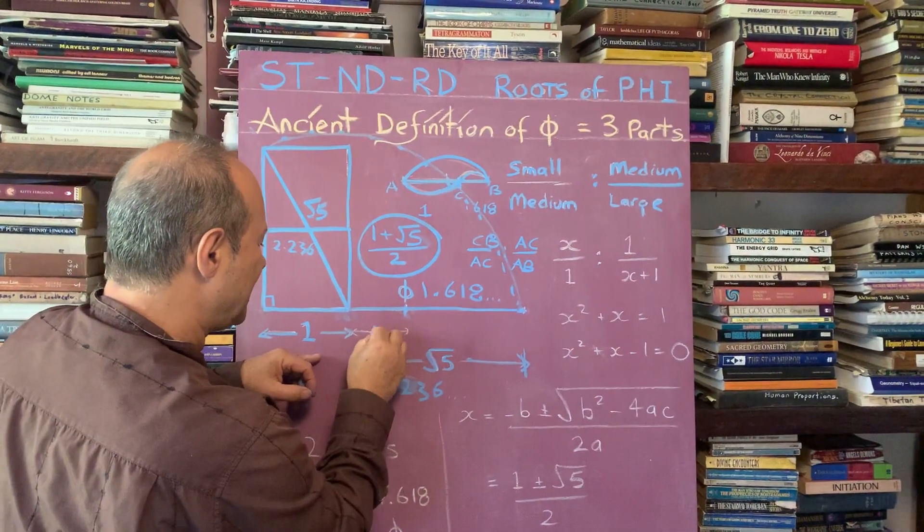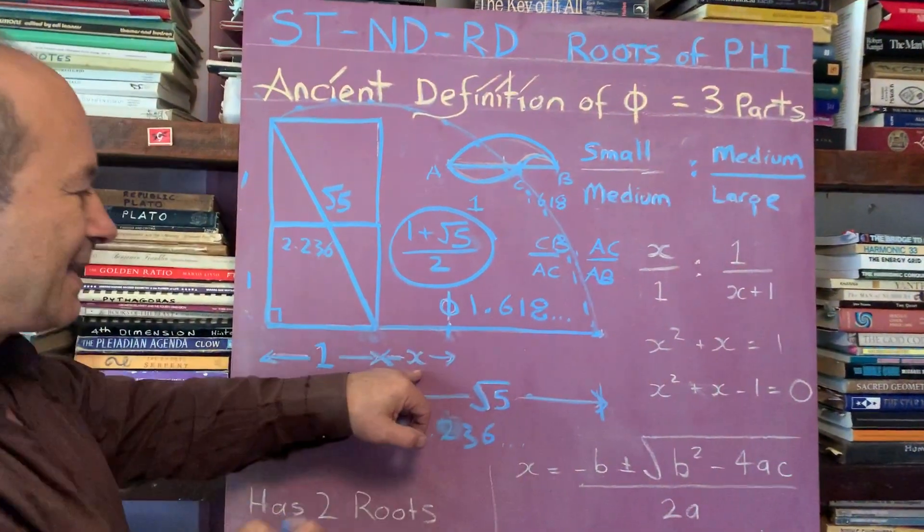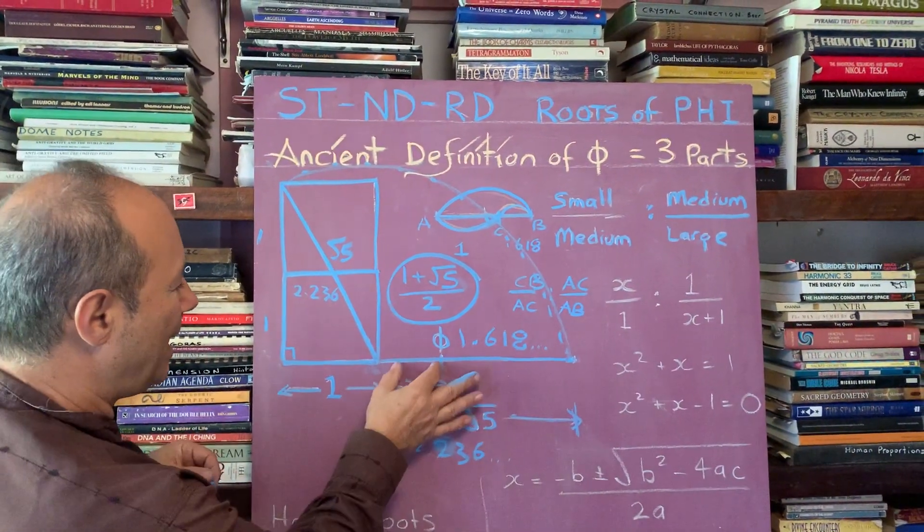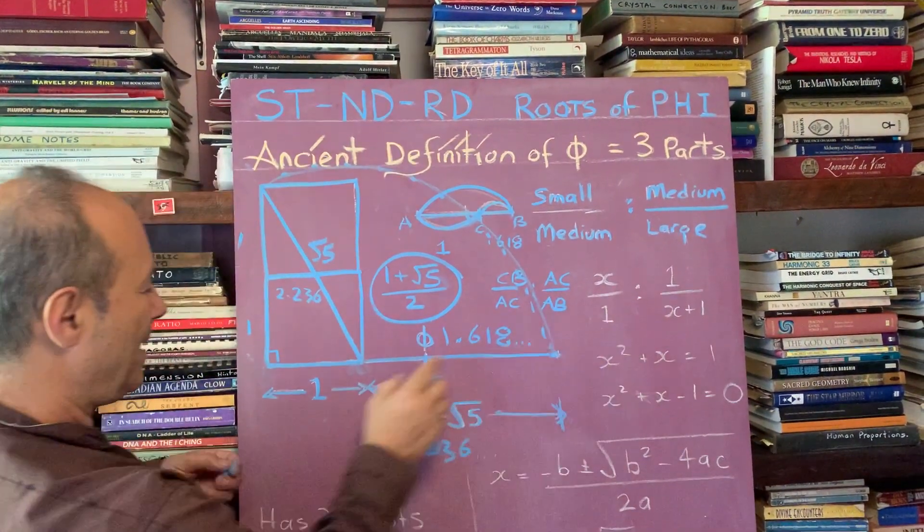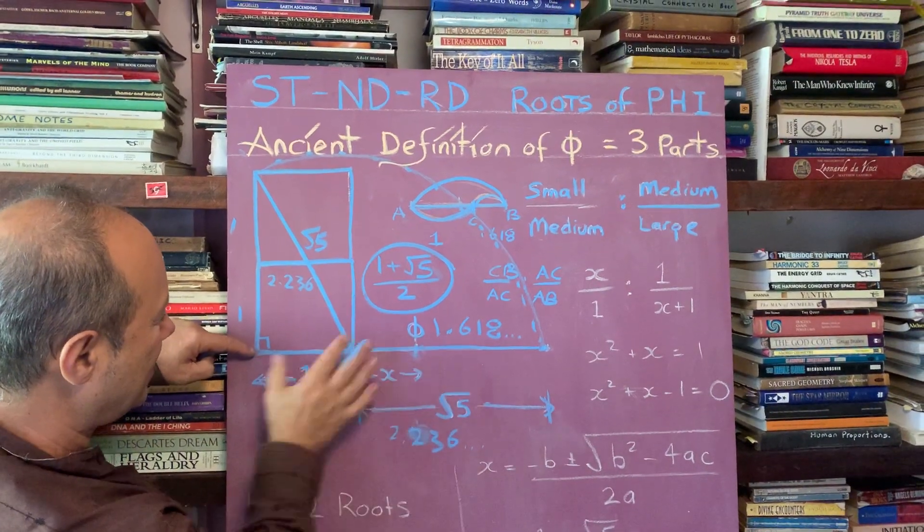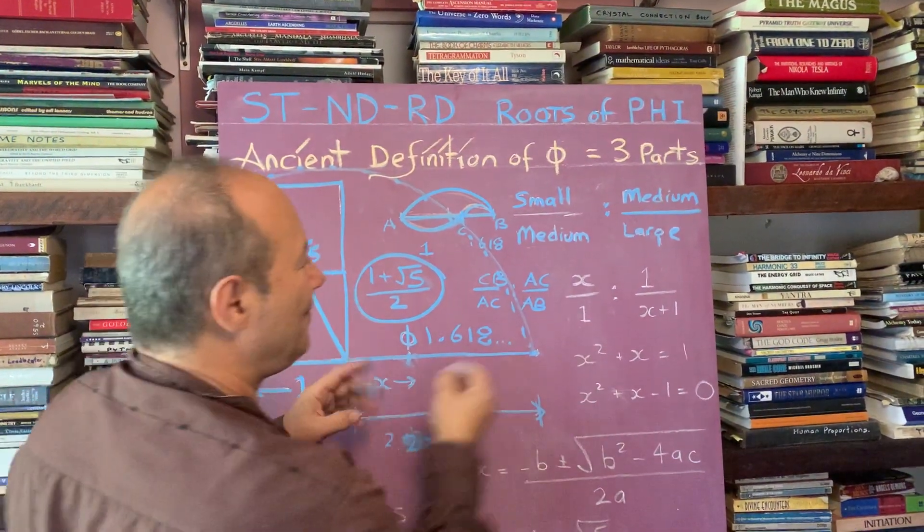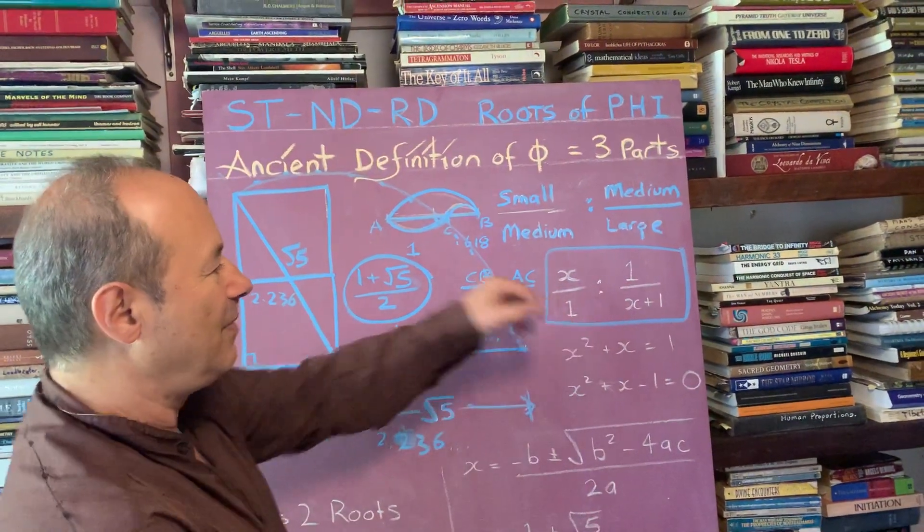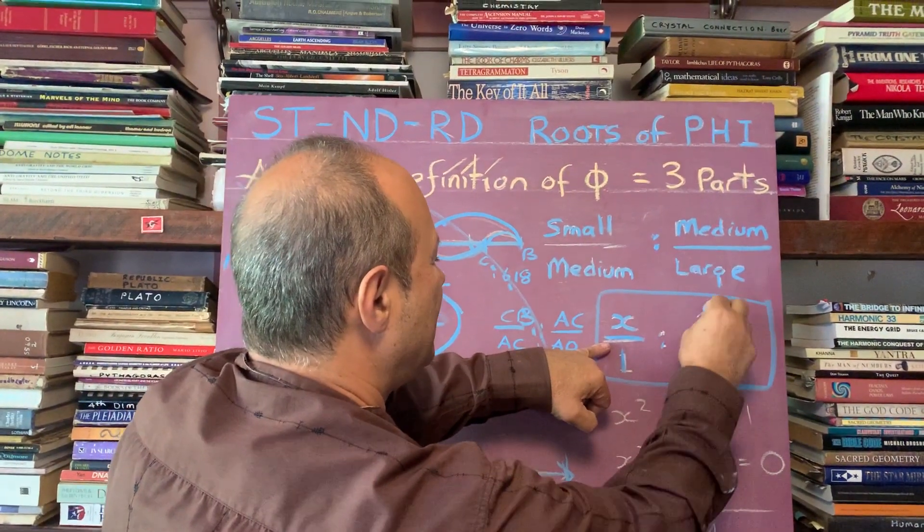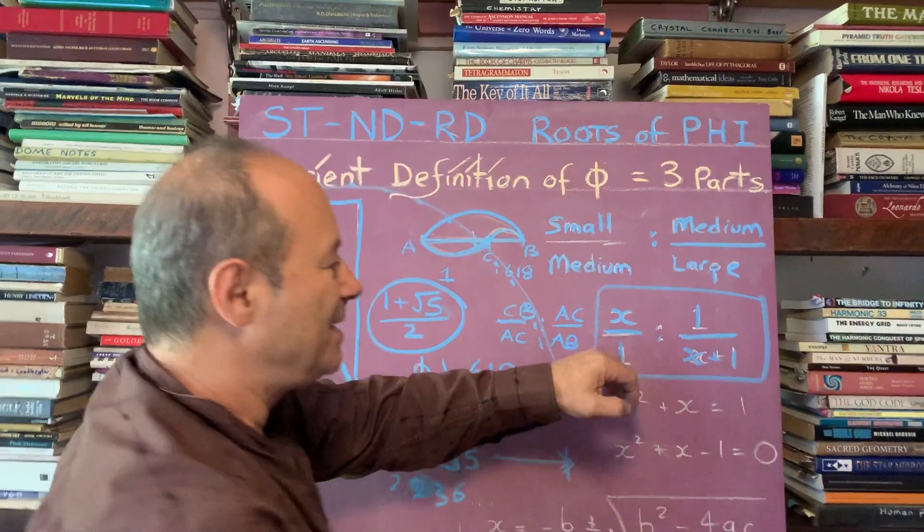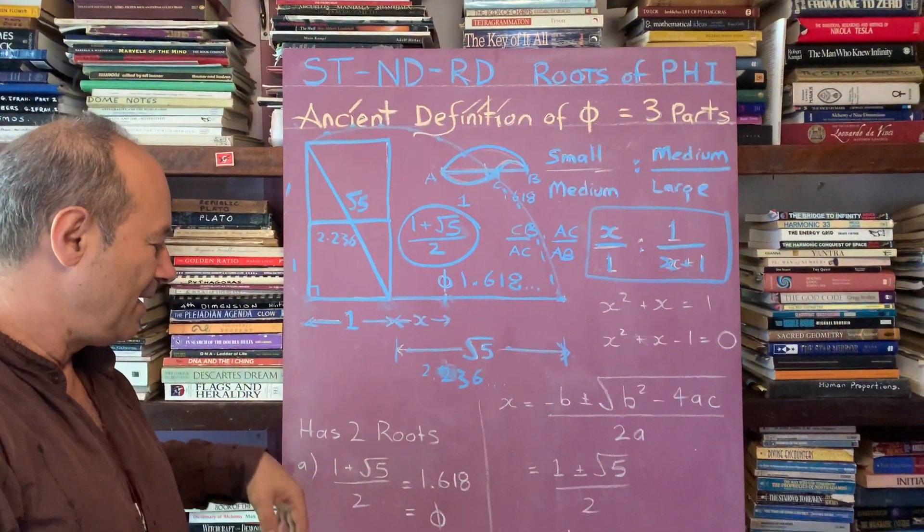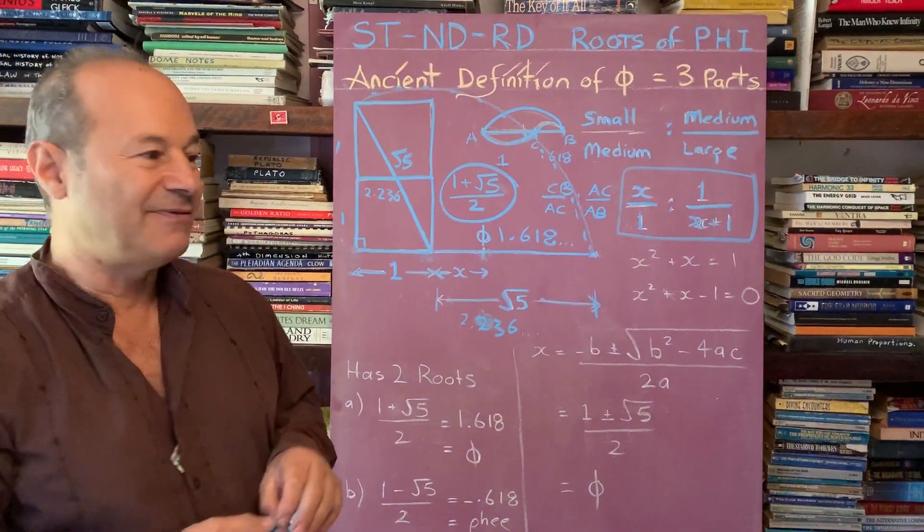There's another distance here called x. To calculate this value of x, which the Arabs called the unknown, we end up with an equation that x is to one - the small part is to the large part - x over one is the same as one is to the whole length, which is one plus x. So here the Arabs invented this algebra with the unknown. I'm not going to finish this off, I'm just showing you that with the algebraic expression of the unknown, x over one is in the same ratio as one over x plus one. This opens up a whole portal of divine knowledge.